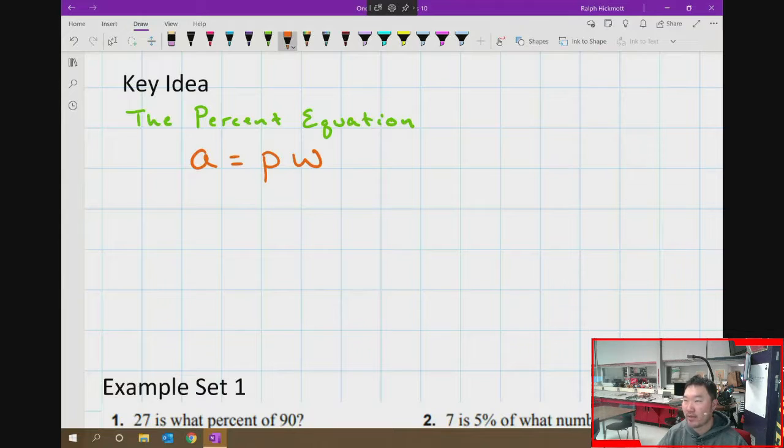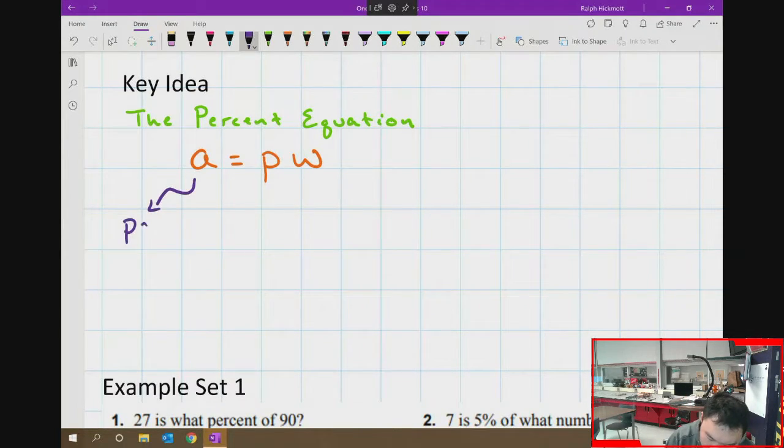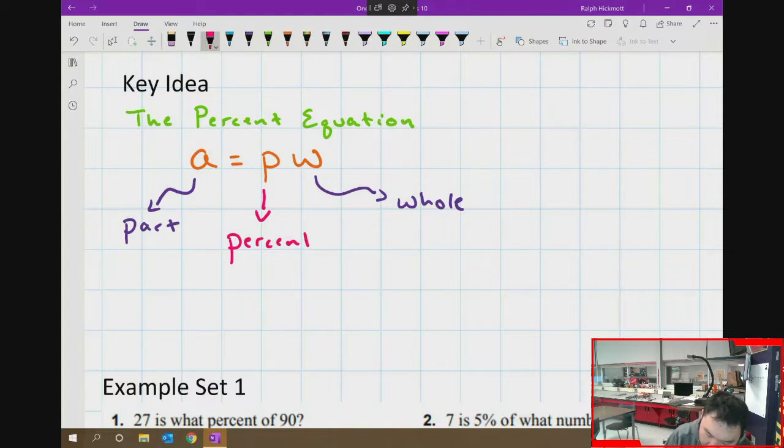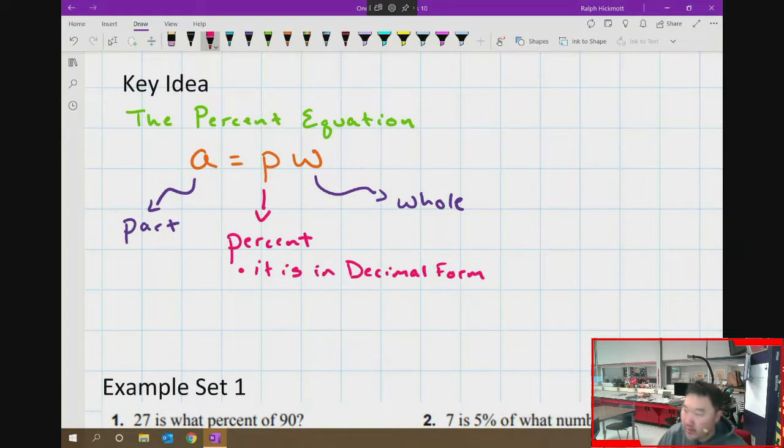There's a couple things we got to be careful of when using the percent equation. a is going to be the part, w is the whole. Those do not change. But p, the percent, kind of adjusts. I'm going to make it a different color so you can see it: p is the percent, but it is in decimal form. So this is where we have to quickly convert the percent to decimal form. In order to use the percent equation, p has to be the decimal; we can't use the actual percent.